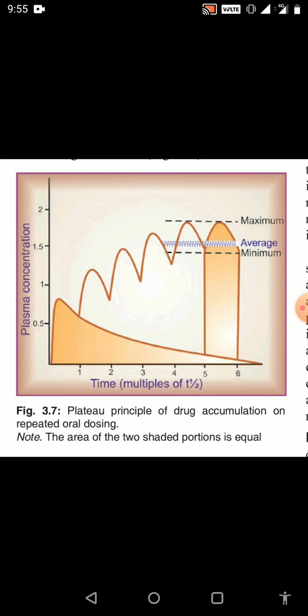After the second dose, the plasma concentration will again rise, peak plasma concentration will be achieved, and after that due to distribution and elimination the fall in plasma concentration will start. Before the expiry of the second dose we administer the third dose of the same drug. We keep administering the same dose before the expiry of each half-life. After four to five half-lives, a pattern is noticed where the graph is still increasing.